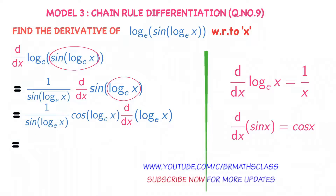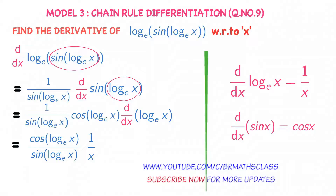That equals cos(log x) base e divided by sin(log x) base e, into the derivative of log x base e. We have the formula: derivative of log x base e is 1/x. Applying that, and since cos x divided by sin x is cot x, you can write the final answer as cot(log x) base e, divided by x.